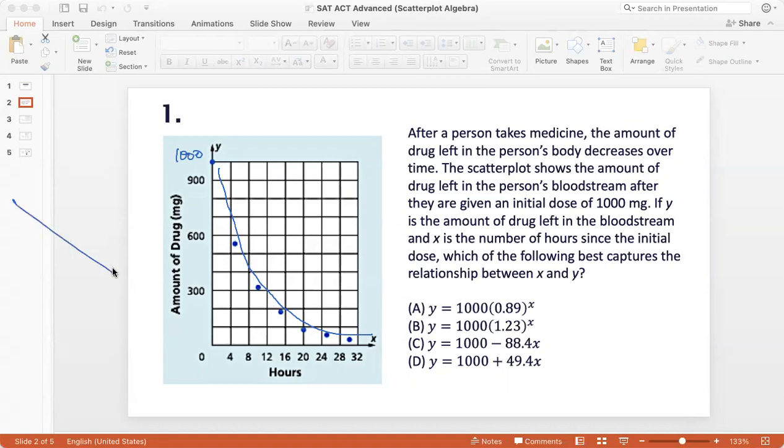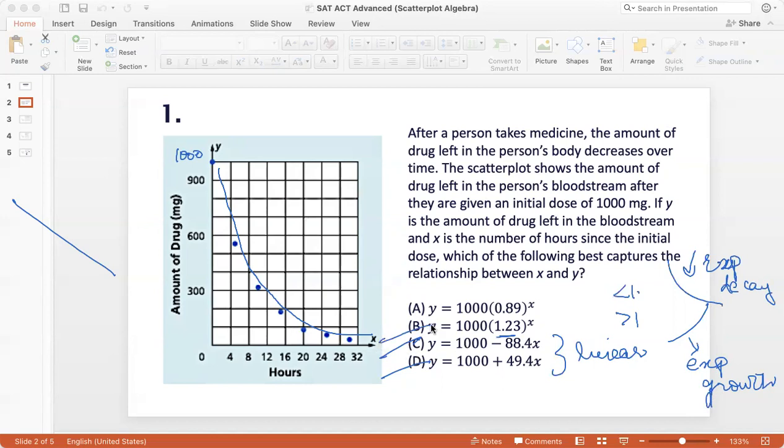So I can straight away eliminate options C and D because they are both linear curves. Now, in option A, the base of the exponent is less than 1, which indicates a decline. And in option B, the base of the exponent is greater than 1, which indicates an increase. Because in any exponential function, the base of the exponent decides how the function will look. If it is less than 1, then there is a decline. It's an exponential decay function. So this is called exponential decay. And if the base of the exponent is greater than 1, then it's an exponential growth function. Y value increases as x increases. So here I can clearly see that this is an exponential decline, and so my answer is option A.